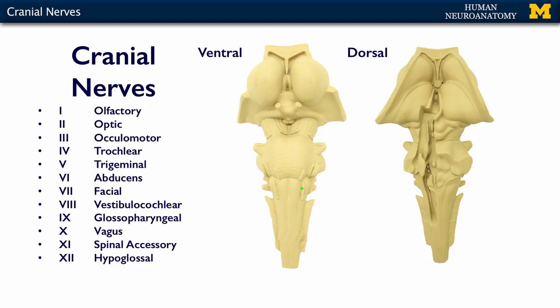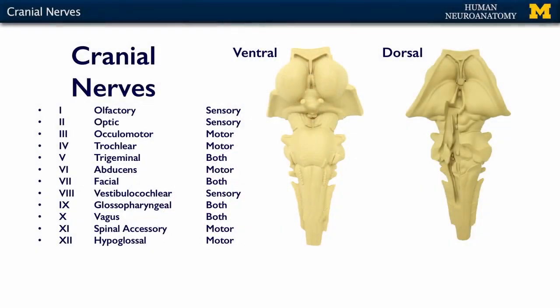The cranial nerves are designated by Roman numerals 1 through 12. Most of the time, depending on your instructor and what they're expecting you to do, they'll accept either answer — either 'olfactory' or 'cranial nerve 1' as an answer for a question involving that nerve. As we mentioned, the cranial nerves can either carry multiple modalities or only single modalities, so let me go through them step by step to talk about which one does what.